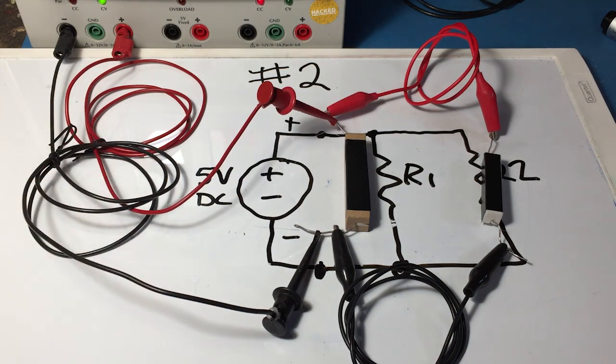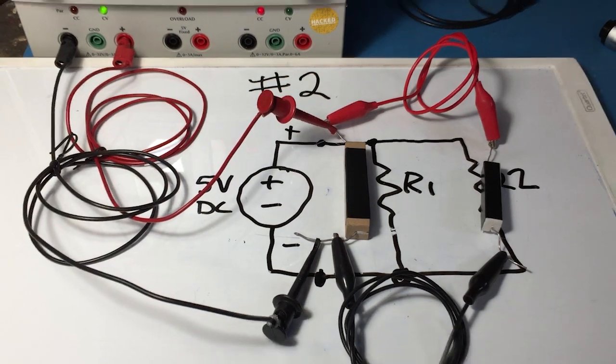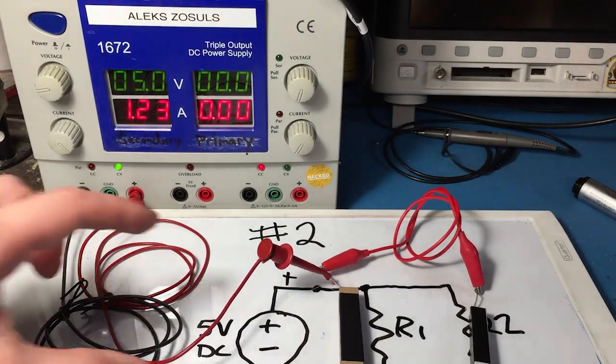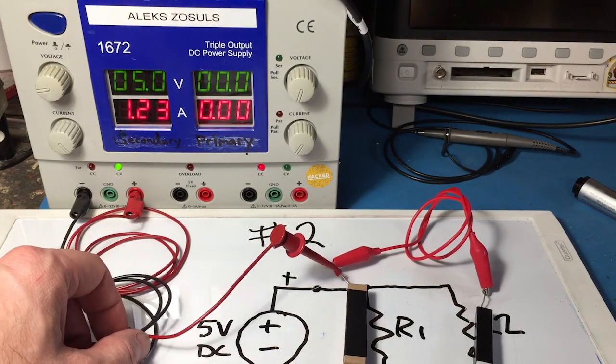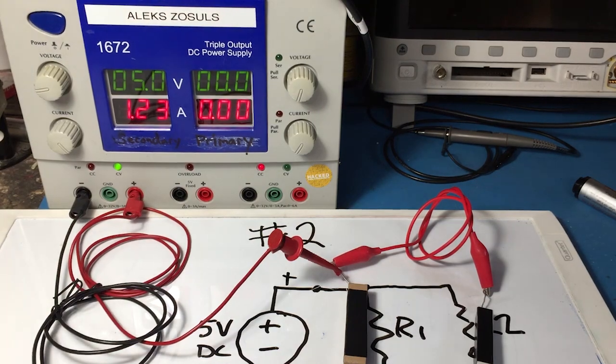If things are working properly, you can see that we still have 5 volts across our power supply. And then our current is 1.23 amps.